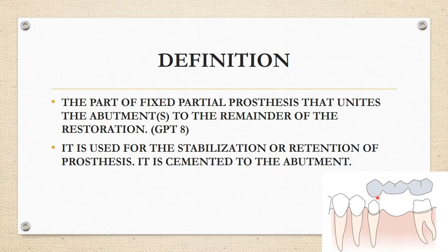The retainers are cemented onto the abutments. The abutments — which are natural teeth — are prepared through tooth preparation, where the size of the abutment teeth is reduced, and then the retainers are cemented on top of the prepared abutments.